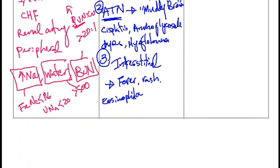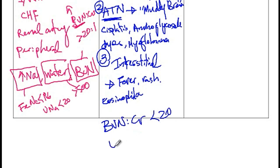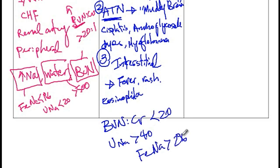Because of decreased renal function in intrinsic renal failure, BUN can no longer be reabsorbed, so the BUN to creatinine ratio is less than 20. Sodium cannot be reabsorbed, so urinary sodium is more than 40 and the fractional excretion of sodium is more than 2%. Since water is not being reabsorbed, urine osmolarity is less than 350.